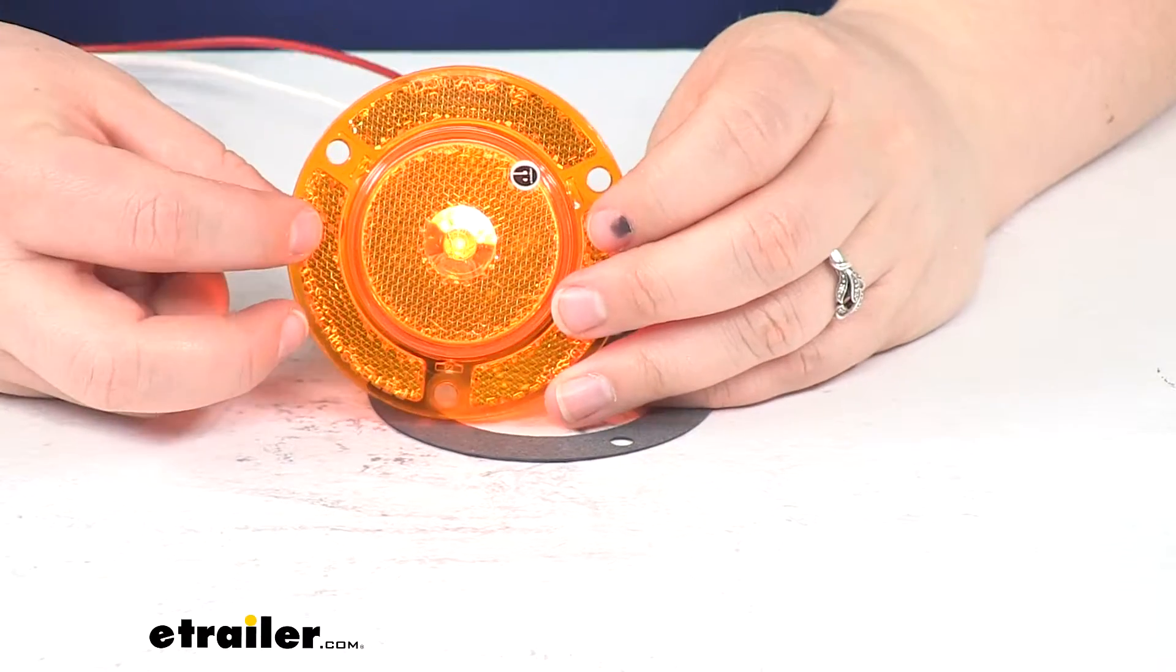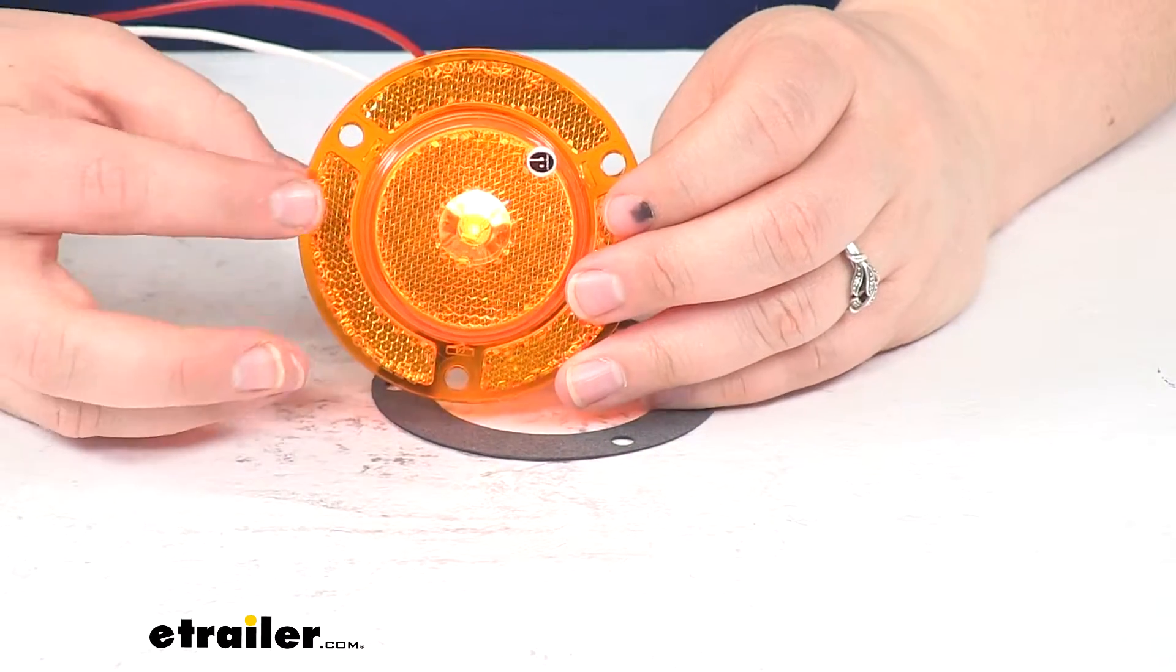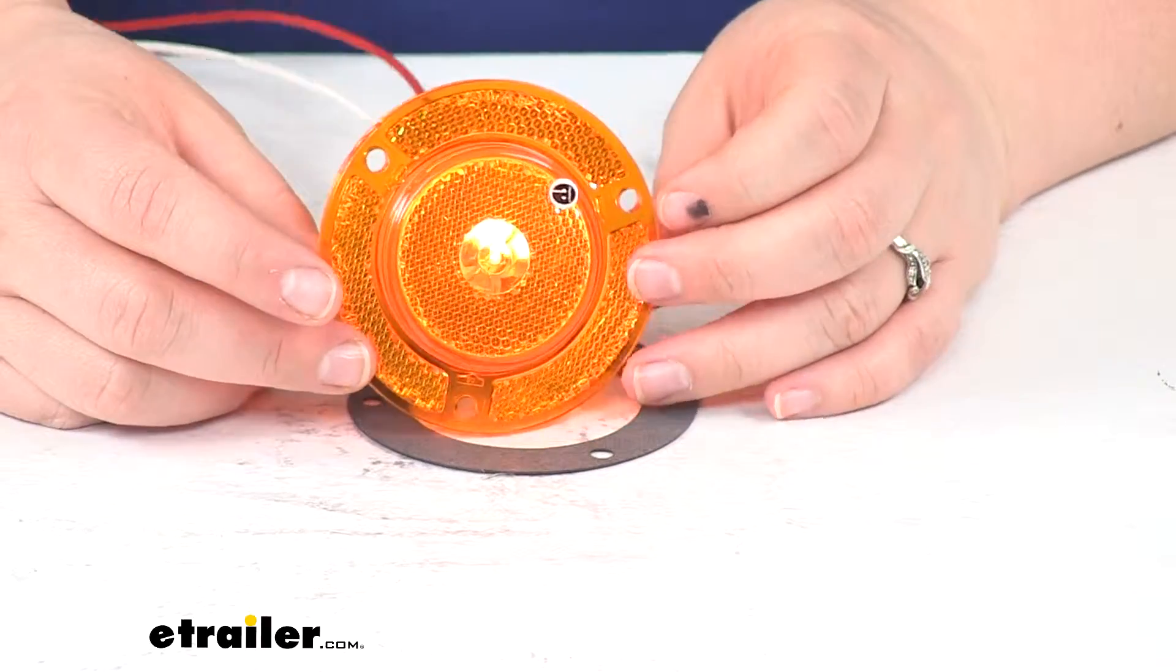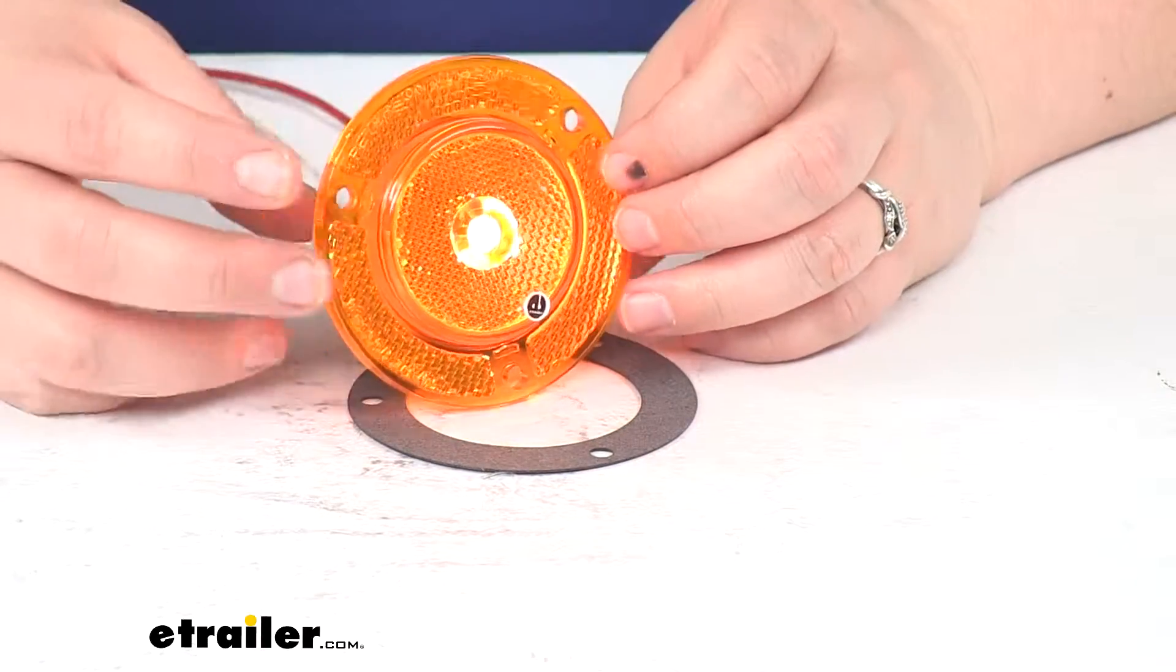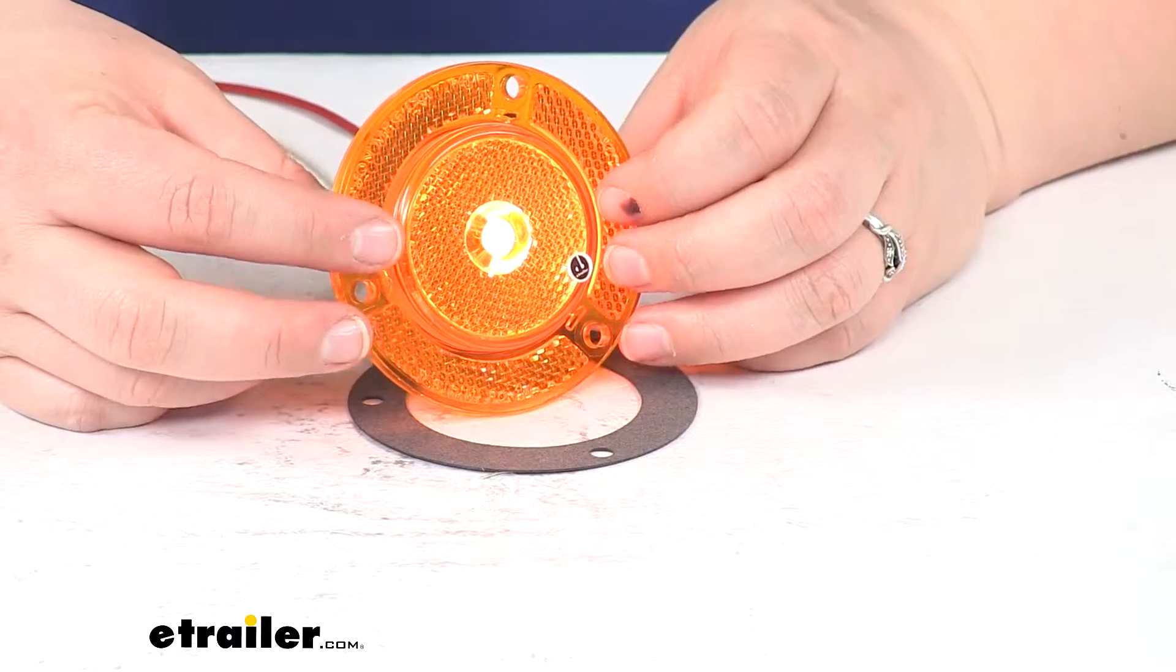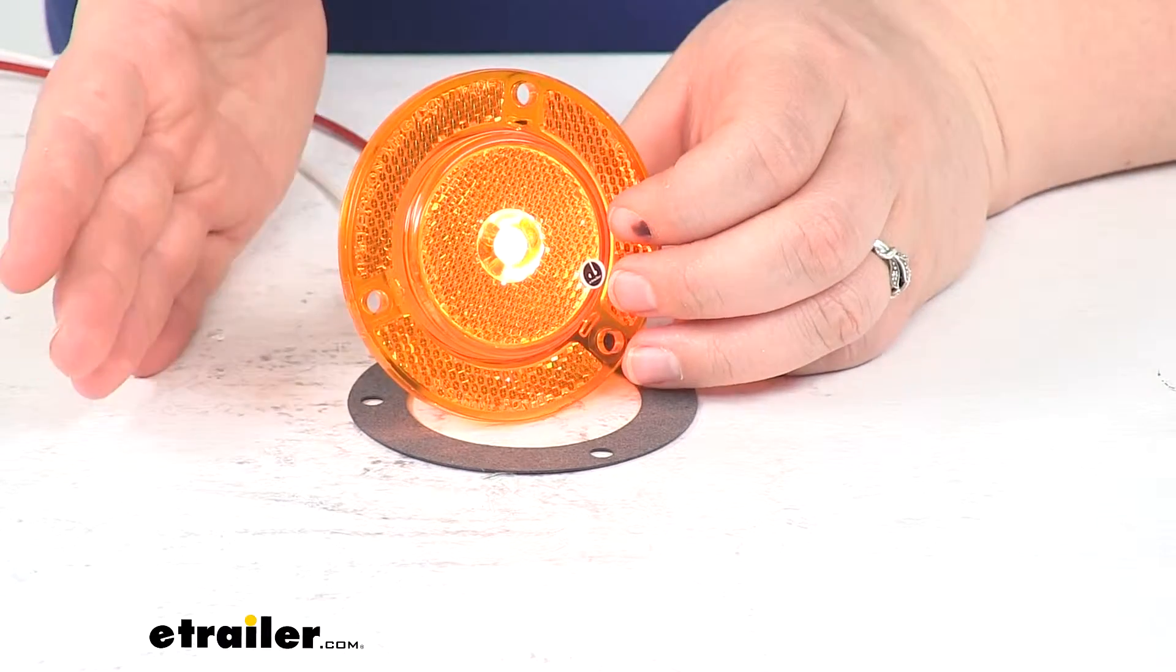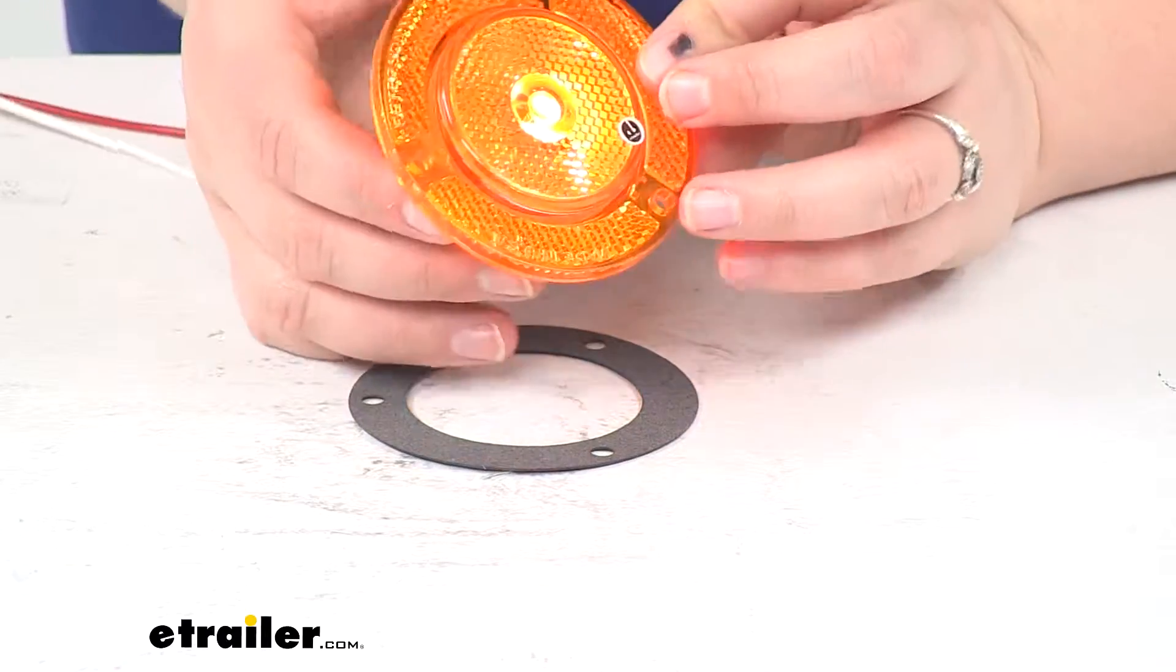That amber lens is going to be good for our front or side markers along the back, just any time we want to have a little extra visibility for our trailer. And this light is going to be P2 rated. Basically what that means is that it's going to produce a 45 degree angle of light to either side of its center line.